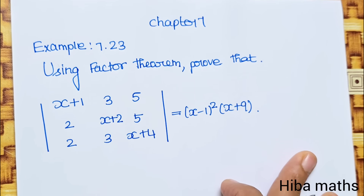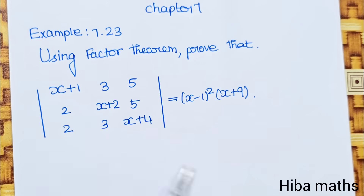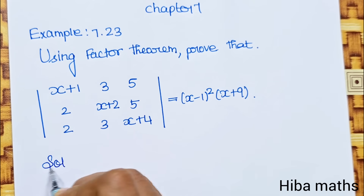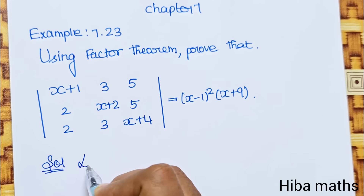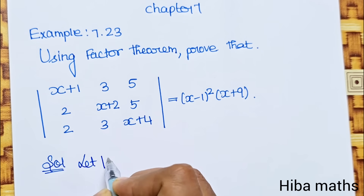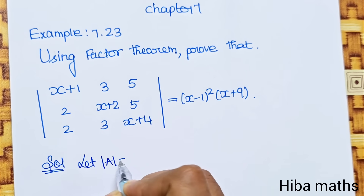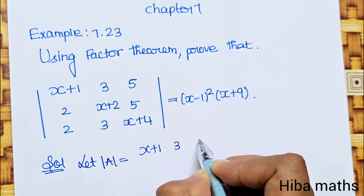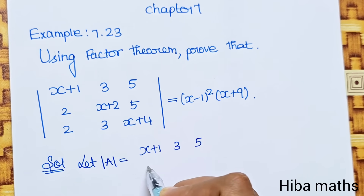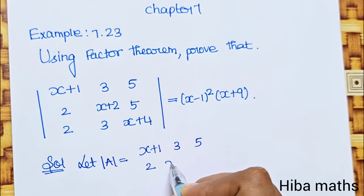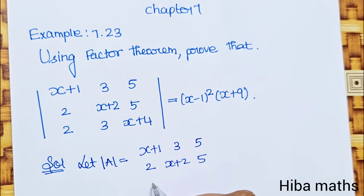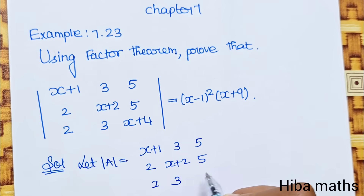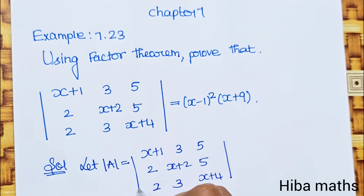So, we need to prove this using the Factor Theorem. Let modulus of A be equal to the determinant with rows (x+1, 3, 5), (2, x+2, 5), (2, 3, x+4).